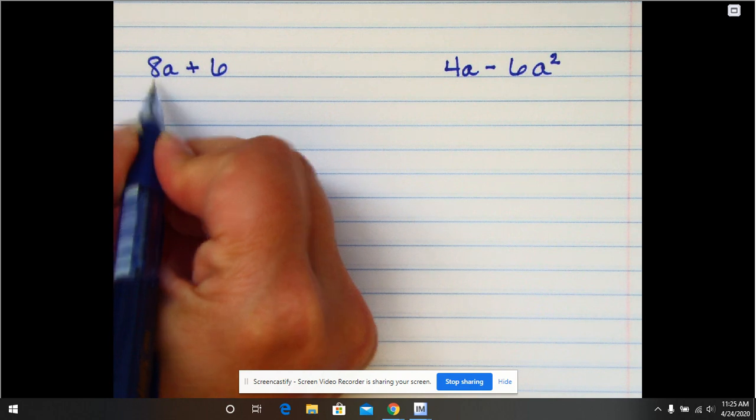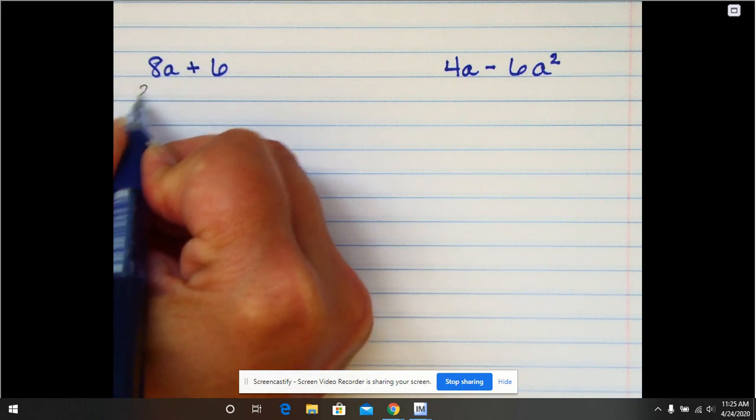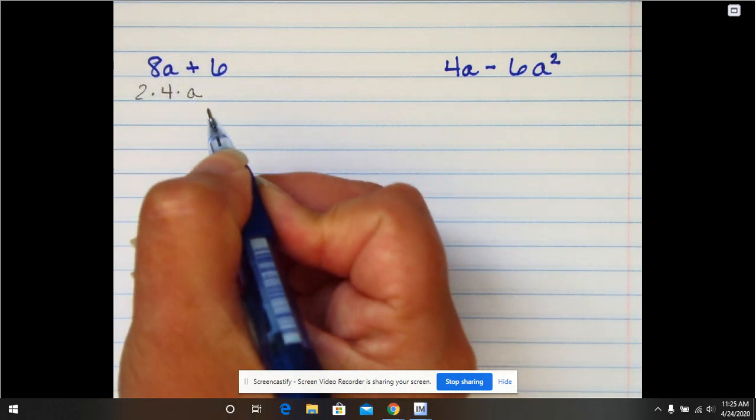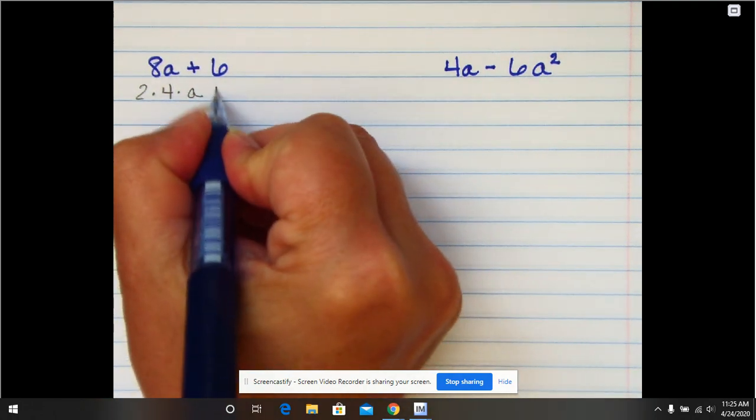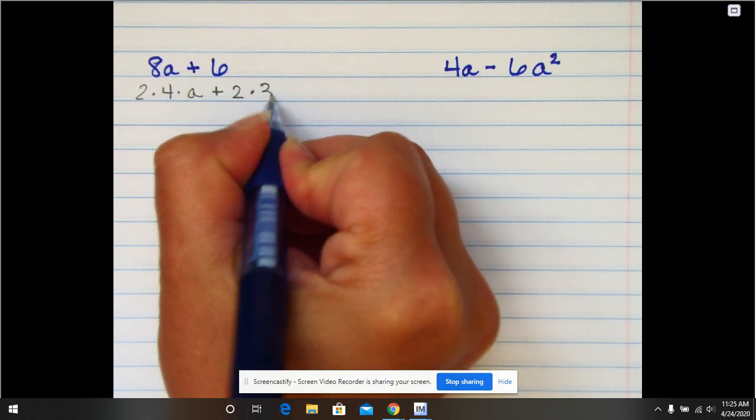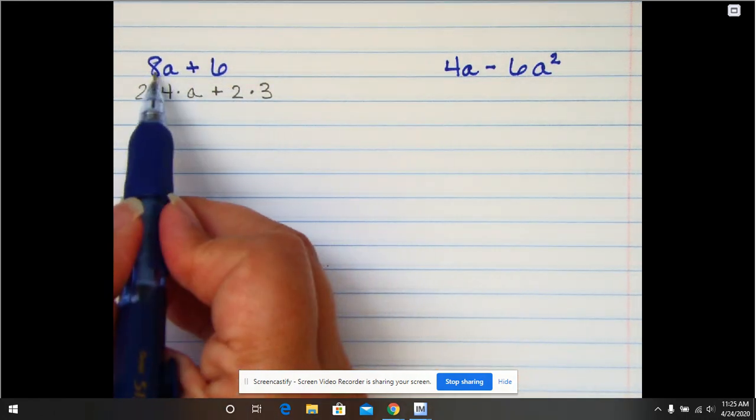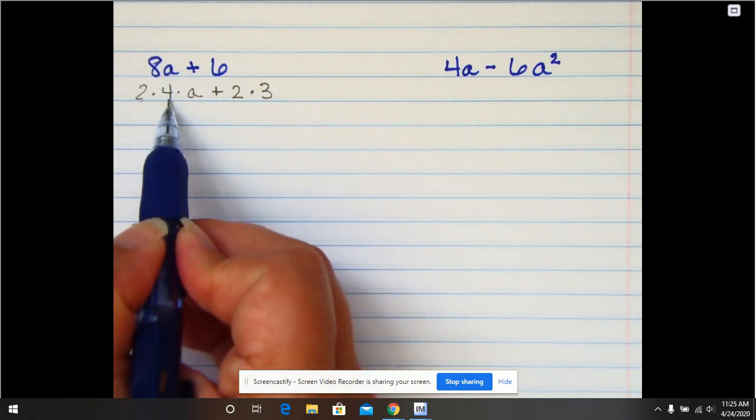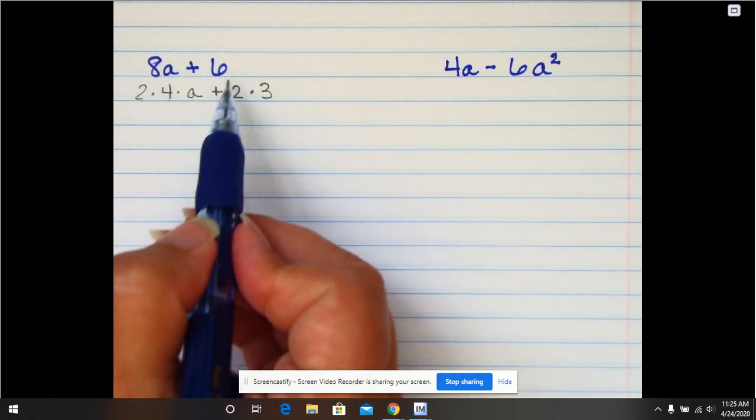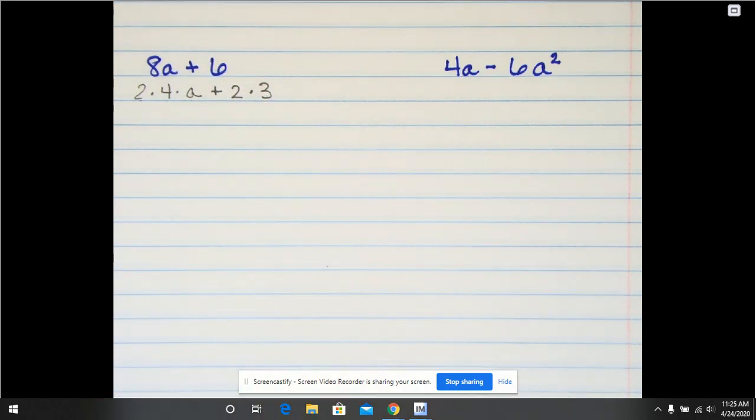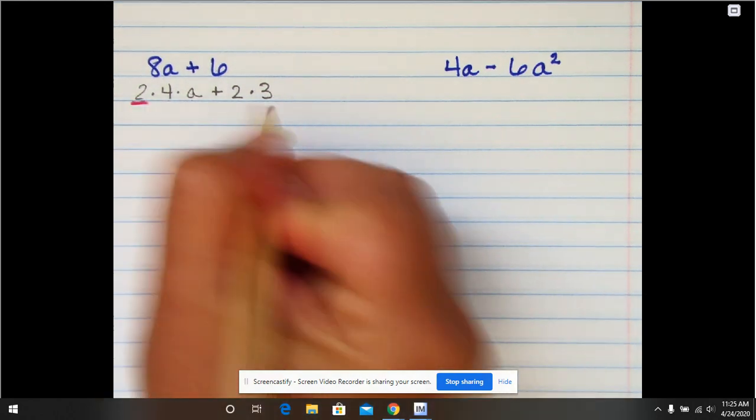So in this case this is 2 times 4 times a plus 2 times 3. So the factors of this coefficient and variable are 2 times 4 times a and the factors of this constant are 2 times 3. The thing that I see that they have in common is a 2.